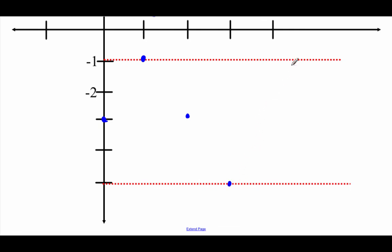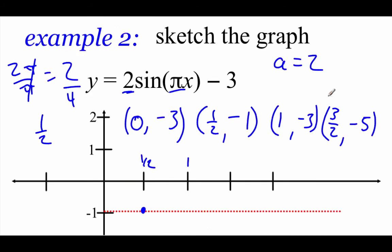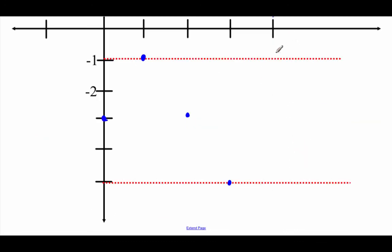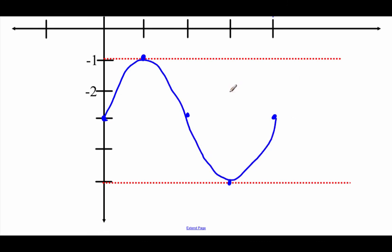Our last x value: 3/2 plus 1/2 is 4/2, which is 2. Plugging in: 2 times π is 2π, sine of 2π is 0, times 2 is 0, minus 3 gives negative 3. So at x = 2 we're back at negative 3. I'll connect these dots with the sine curve. That's the last example for this video — please remember to fill out the Google form linked in the description below. Thanks for watching.